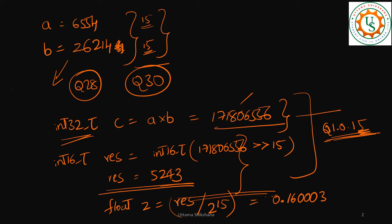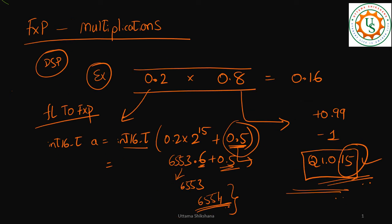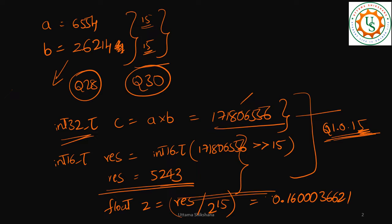Then I will get 0.160003662. So if you clearly see, the multiplication was 0.16, and after doing the multiplications in DSP fixed point operation, finally we got back the very accurate number.